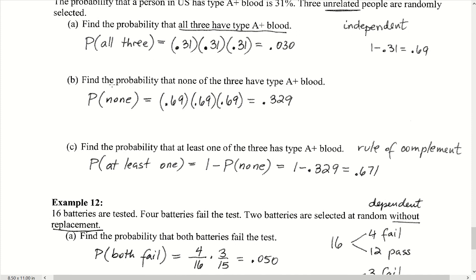If we want the probability that none of the three have type A+ blood, we need the probability that each individual does not have it. Since 31% have A+ blood, 1 − 0.31 = 0.69 is the probability a particular individual does not have A+ blood. Therefore this probability is 0.69 × 0.69 × 0.69, which gives us 0.329.